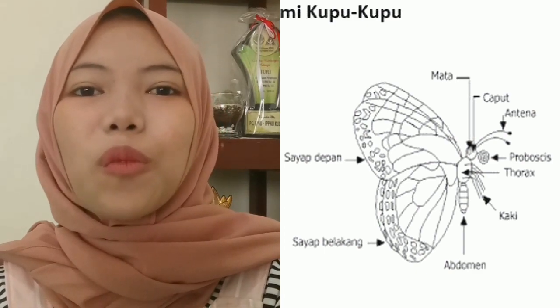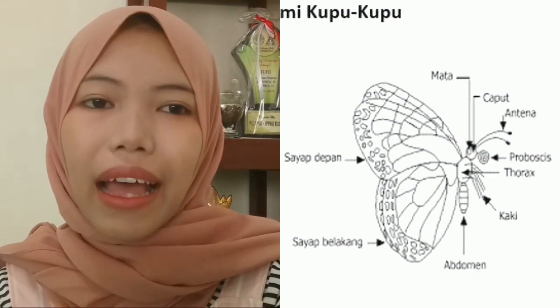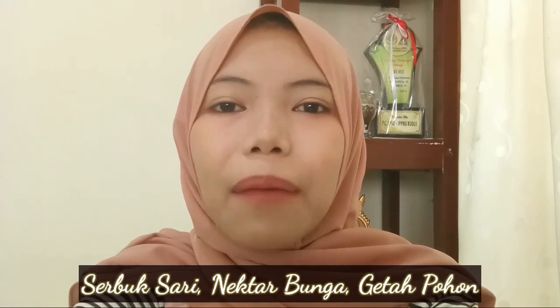Layaknya secara umum, kupu-kupu juga mempunyai kepala dengan indera mata, mulut, dan antena. Dada kupu-kupu merupakan bagian yang terletak antara kepala dengan perut. Bagian ini terhubung dengan kepala melalui membran tipis yang berperan sebagai leher. Ciri utama dari dada kupu-kupu adalah bentuknya yang beruas dan ditempeli oleh sayap. Sedangkan bagian perut kupu-kupu adalah tempat terjadinya proses pencernaan makanan. Makanan kupu-kupu tidak jauh berbeda dengan serangga lain; binatang ini umumnya mengonsumsi serbuk sari dan nektar bunga serta getah pohon.